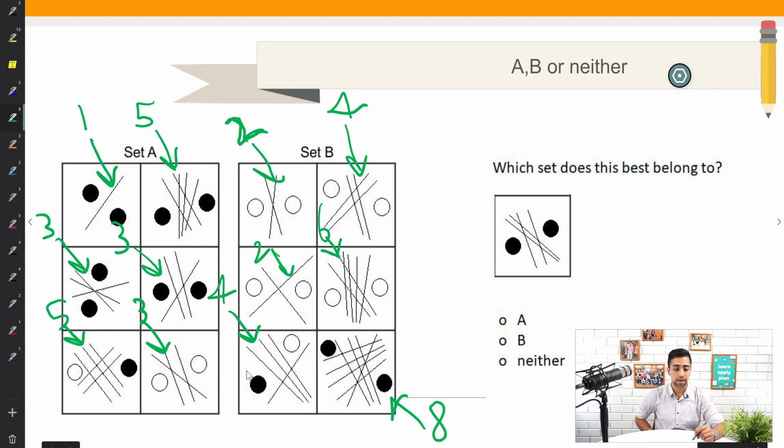That seems like a pattern and I can apply it to every box. And now looking at the option, what I notice is it has four lines or an even number of lines. That means my answer is going to be B.